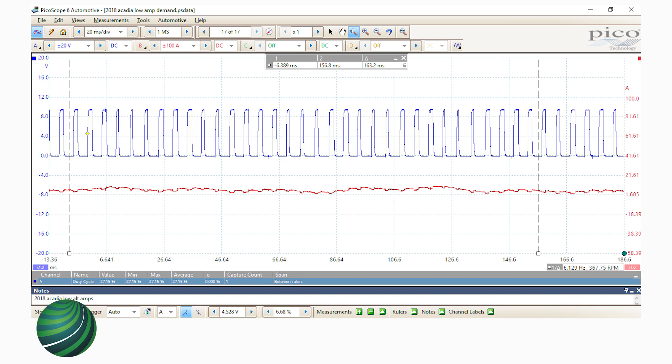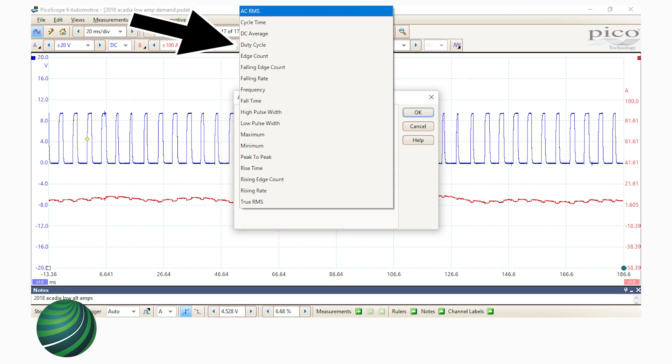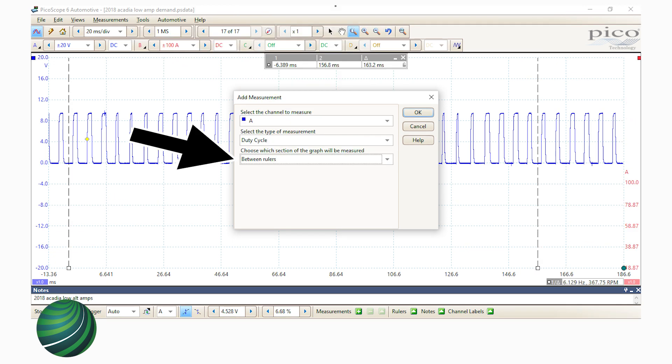Once pattern is displayed, set cursors to measure duty cycle. Select measurements tab, then select duty cycle. When measuring duty cycle, you can select an area between cursors or the entire trace.